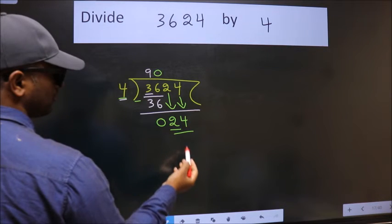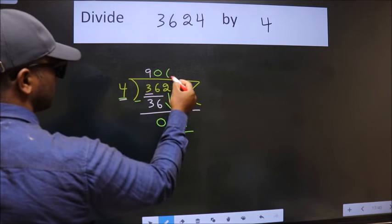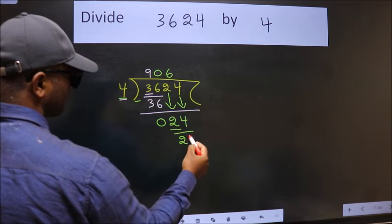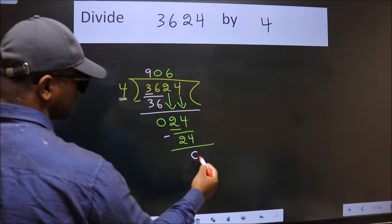So 24. When do we get 24 in 4 table? 4 6 24. Now we subtract. We get 0.